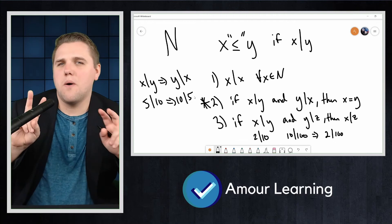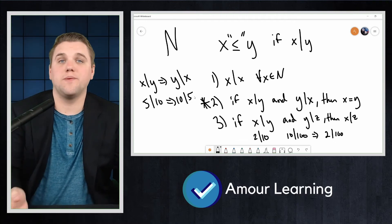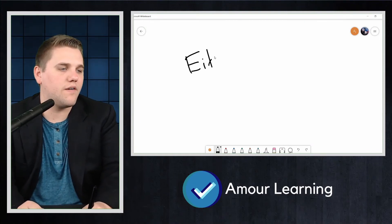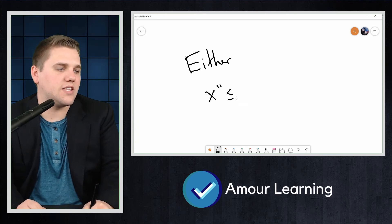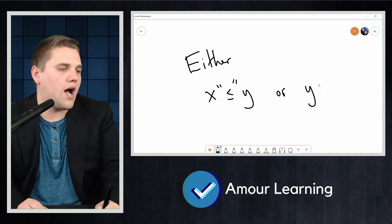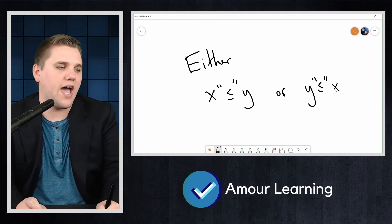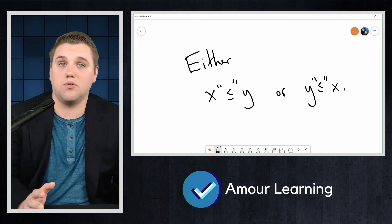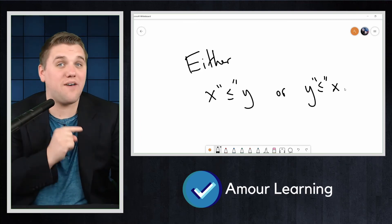Now you might ask, what is partial about partial orderings? Well, partial orderings don't have to be total orderings. A total ordering means that for any X and Y in the universe, either X is less than or equal to Y or Y is less than or equal to X. So this means that X and Y are comparable.